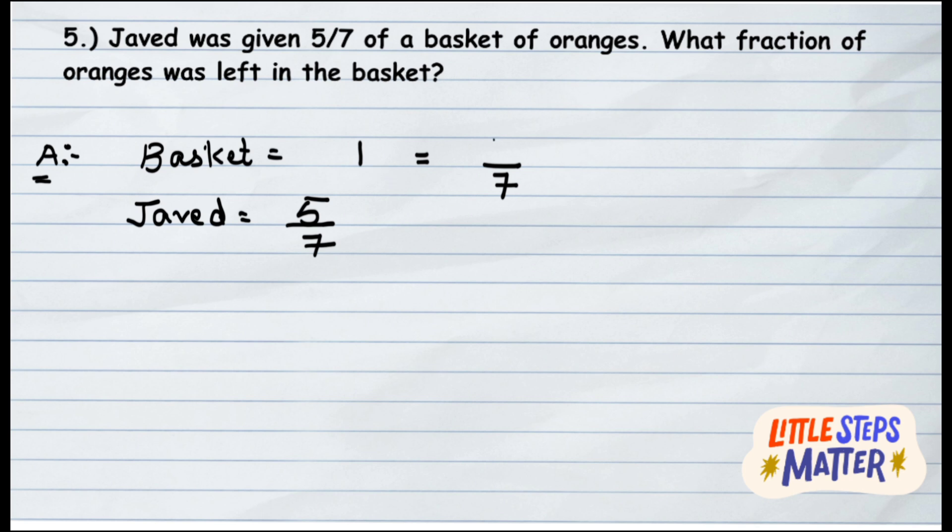So now how much fraction of oranges were there in the basket? 7 upon 7. And from that, 5 upon 7 was given to Javid. So now just simply do the subtraction to find how much fraction of oranges are left.